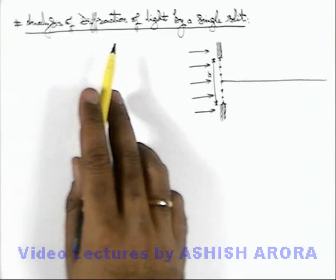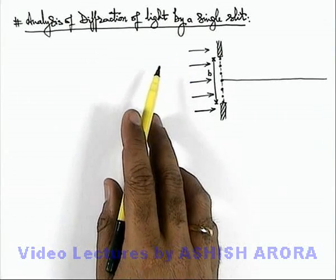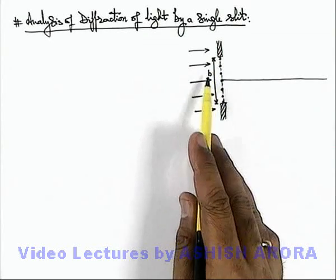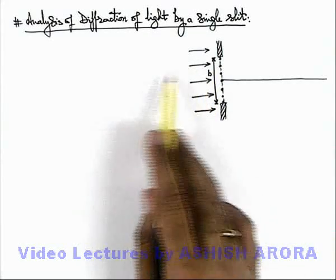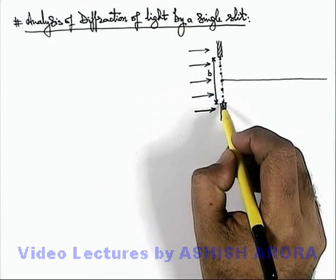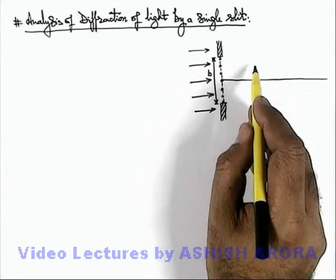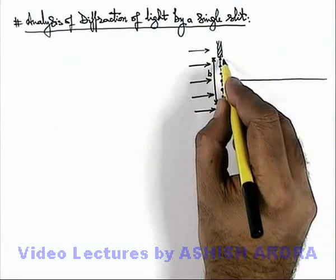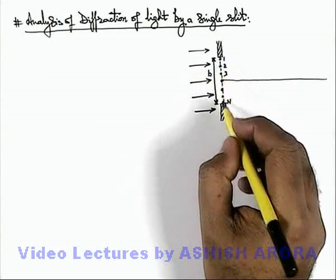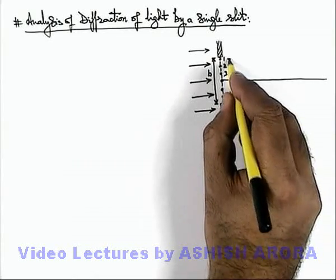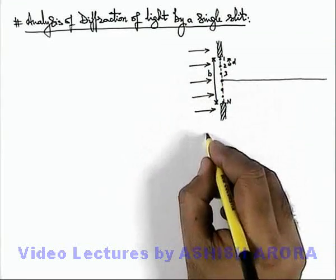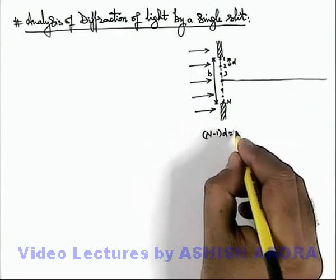Let us now analyze the diffraction of light by a single slit. Here you can see the enlarged view of a single slit which has a slit width b, on which a parallel beam of light is incident. The part of the wavefront of the light which is of the size of the slit width will only pass on. We divide the wavefront into wavelets 1, 2, 3 up to n, and the separation between two adjoining wavelets we consider as d. So as there are n wavelets, we can write (n−1)d = b, the slit width.